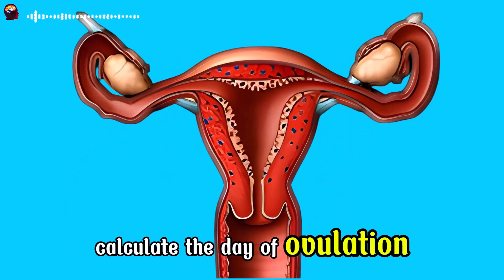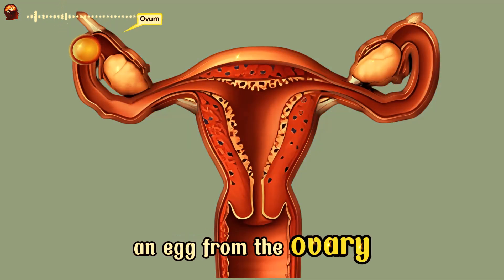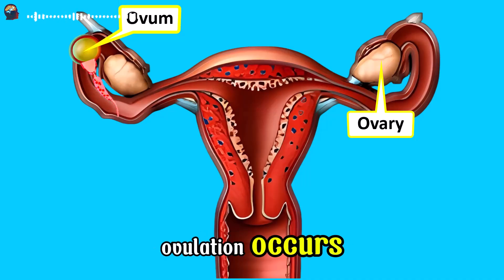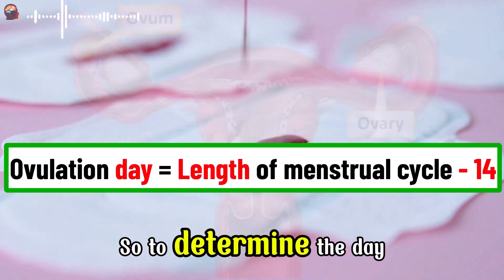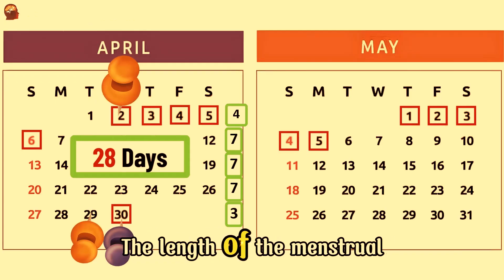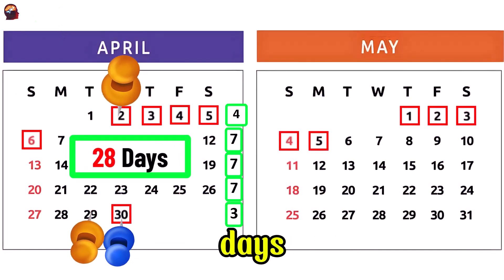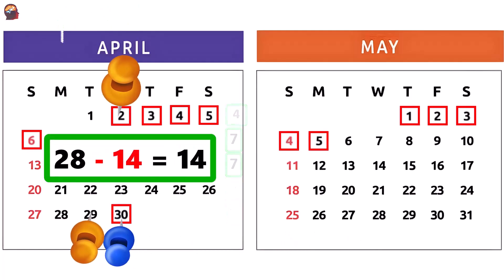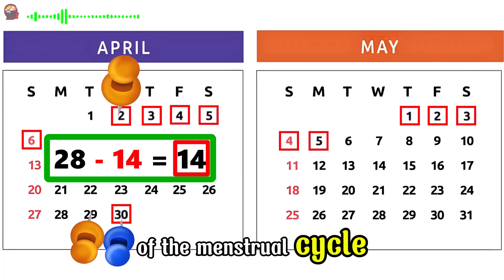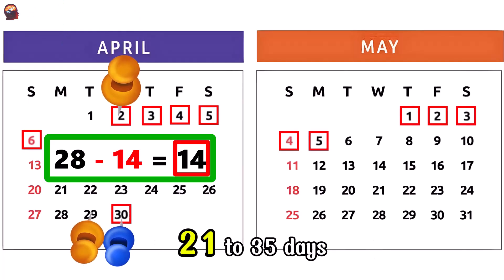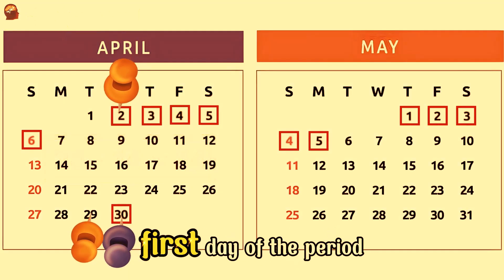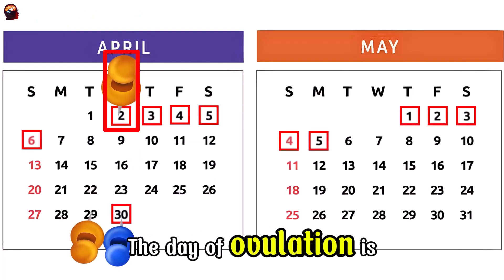The next step is to calculate the day of ovulation. Ovulation is the release of an egg from the ovary, ready to be fertilized by a spermatozoon. You should know that in all women, ovulation occurs 14 days before the start of the next period. So, to determine the day of ovulation, subtract 14 days from the length of the menstrual cycle. The length of the menstrual cycle in April is 28 days, so the day of ovulation equals 28 minus 14, which gives us 14. This means ovulation occurs on the 14th day of the cycle. Count 14 days from the first day of the period, April 2nd — the day of ovulation is April 15th.